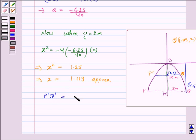P'Q' is double the x-coordinate, that is 2x. So it is 2 × 1.119 = 2.23 meter approximately.